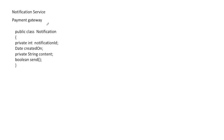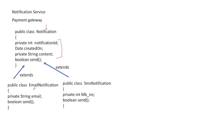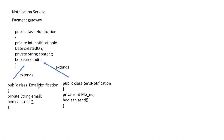We create a Notification class with data members: content, creation date as a Date object, and notification ID. It has a send() function. We extend this into two child classes: EmailNotification and SMSNotification. Both inherit notification ID, date, and content from the parent. Content includes flight details like departure time sent to the customer.